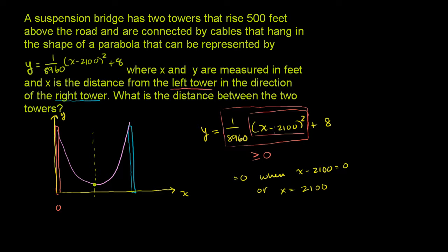When x equals 2100, the squared term is 0, so y is just equal to 8. So the minimum point — the vertex — is at the coordinate x equals 2100, y equals 8. And it's going to be halfway between our two towers. So if the midpoint is at 2100, the right tower is twice that distance: 2 times 2100 equals 4200 feet. So the distance between the two towers is 4200 feet.